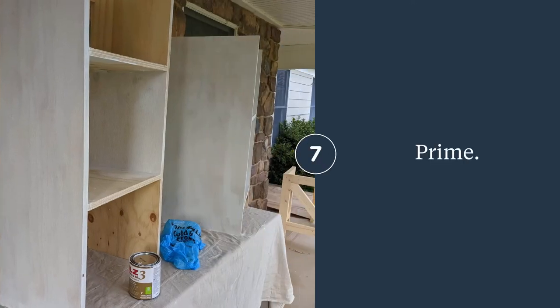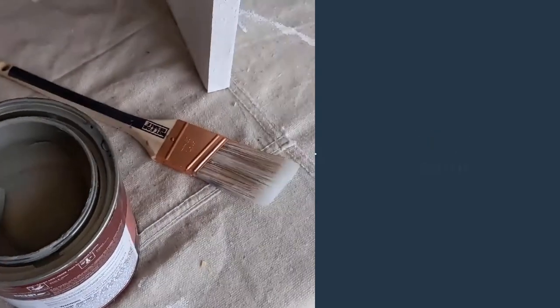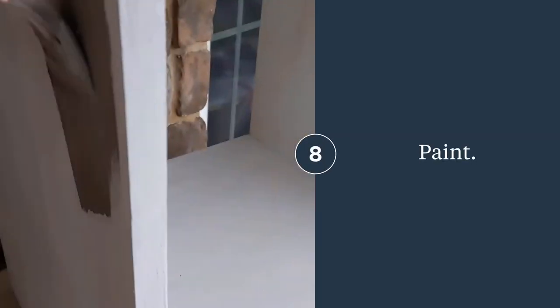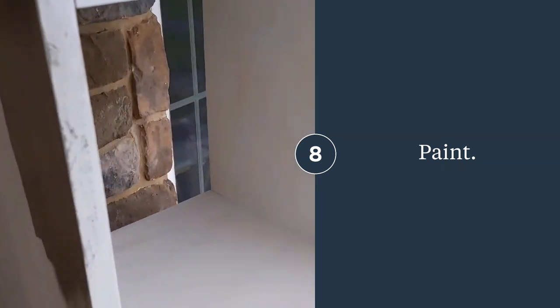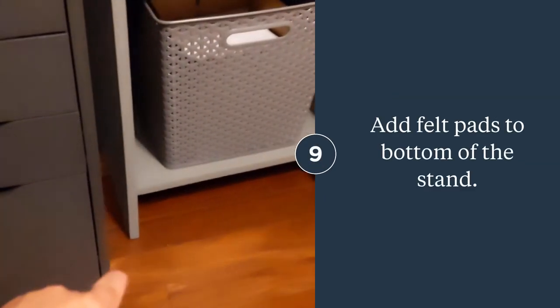Once that was complete, I was able to prime my whole cabinet and then paint it. This is the barn wood gray that I'm using for all of the cabinets in this room. I also added felt pads to the bottom so it wouldn't scratch our floors.